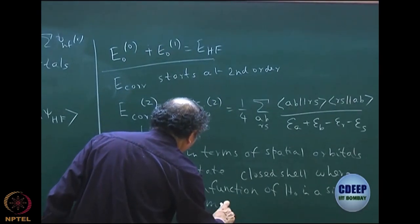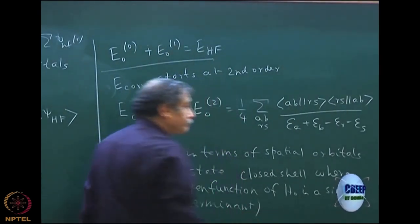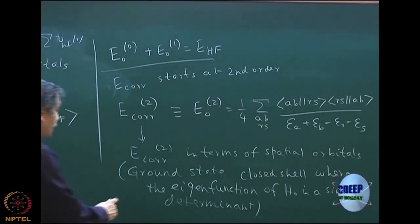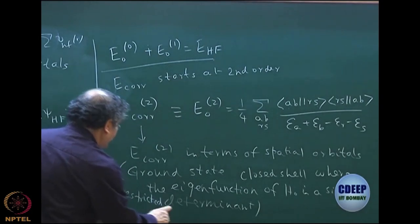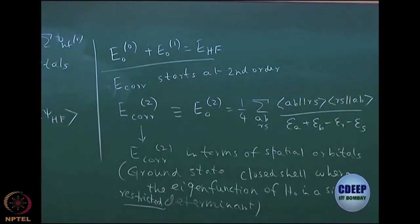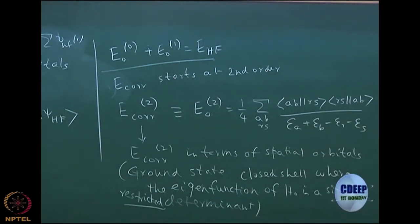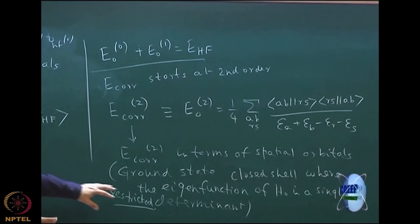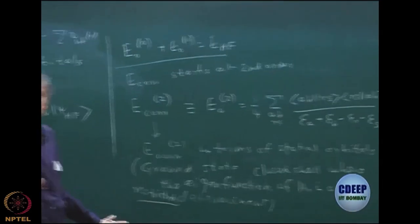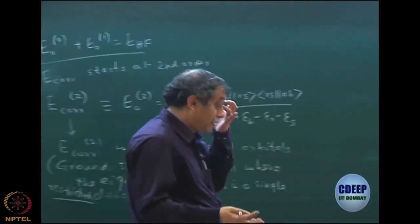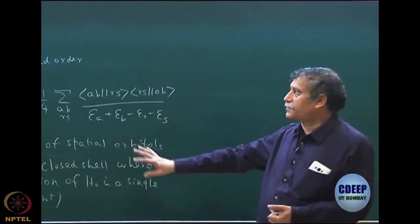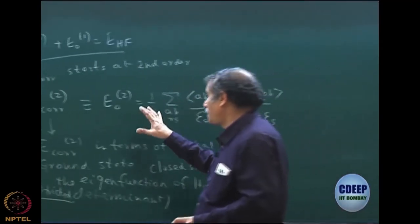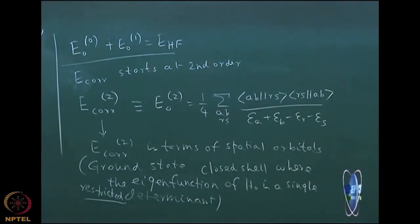In fact, all eigenfunctions of H₀ are single determinants — specifically a restricted determinant, meaning a closed-shell system. That has been the requirement for deriving this formula. However, if it is a single determinant but not restricted, there are other Hartree-Fock variants like unrestricted Hartree-Fock or restricted open-shell; a similar derivation can be done for those.